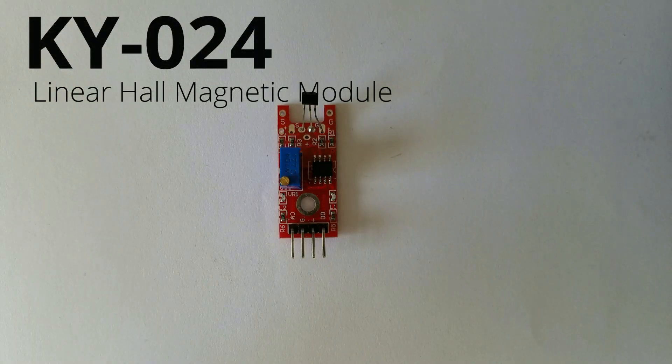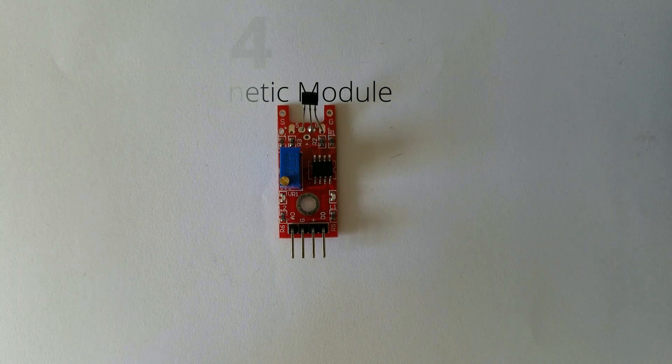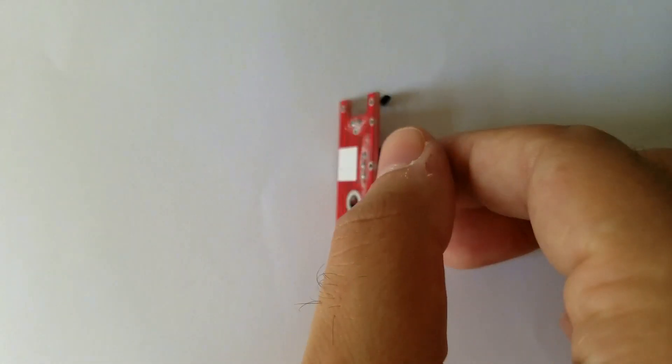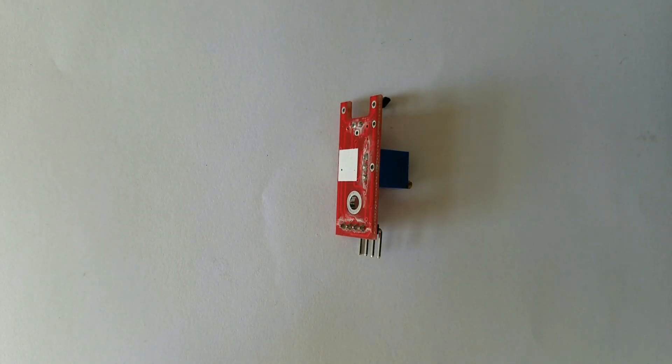Hello guys, today we are going to talk about Linear Hall Magnetic Sensor known as KNY024. This is the module itself, so let's get started.